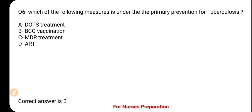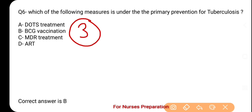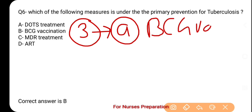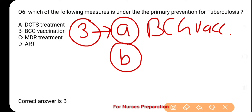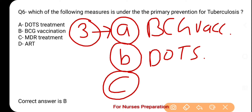And the correct option is option number B — BCG Vaccination. Prevention has three levels. Primary prevention aims to prevent disease before it occurs — BCG Vaccination is an example. Secondary prevention involves treatment after disease onset, such as DOTS treatment. Tertiary prevention involves rehabilitation efforts to eliminate disabilities that arise after treatment.